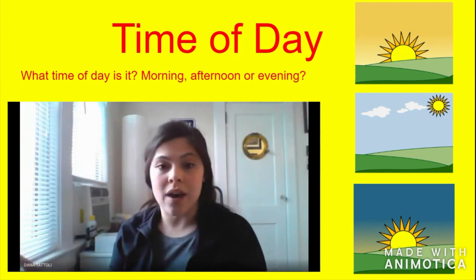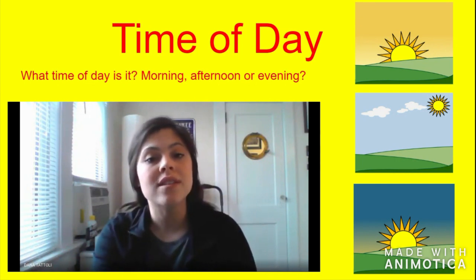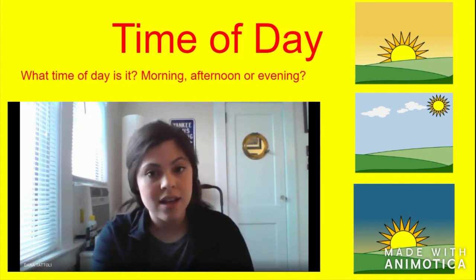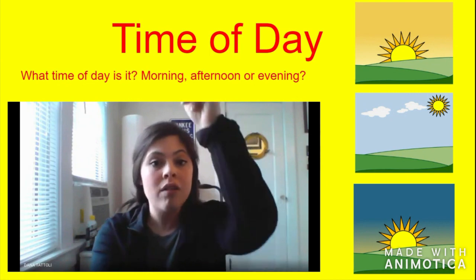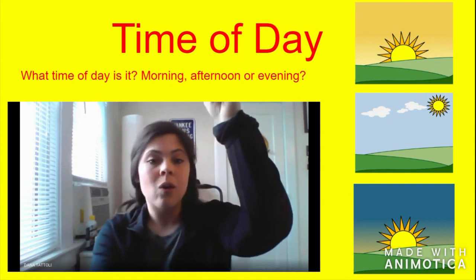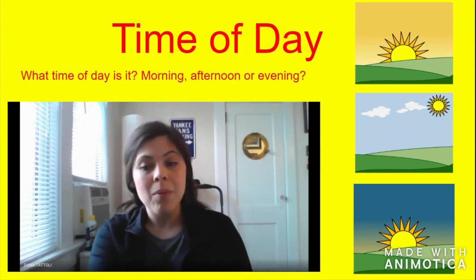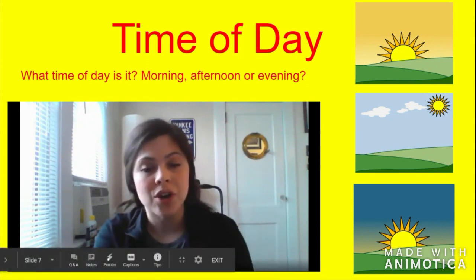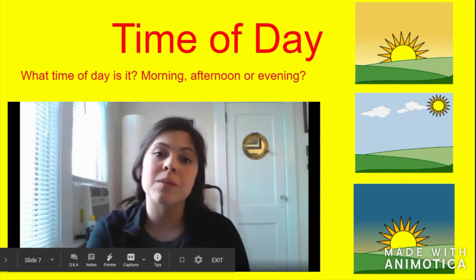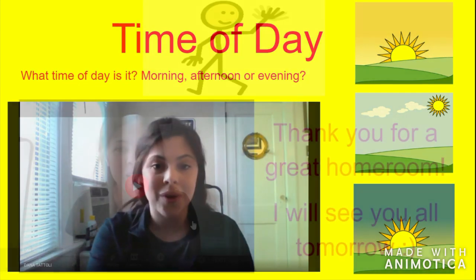The third time of day is the evening — this is when the sun is going down, down, down. If you go to your window and look outside, look for where the sun is. Is the sun coming up? Is it already high in the sky? Or is the sun coming down? Pause this video and point to the picture of what time of day it is — morning, afternoon, or evening.